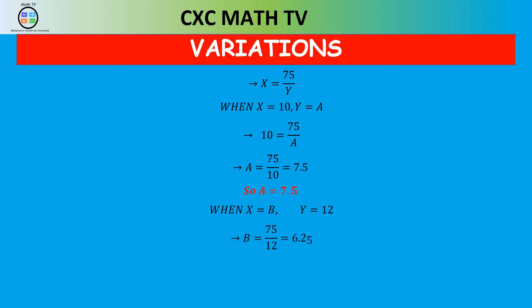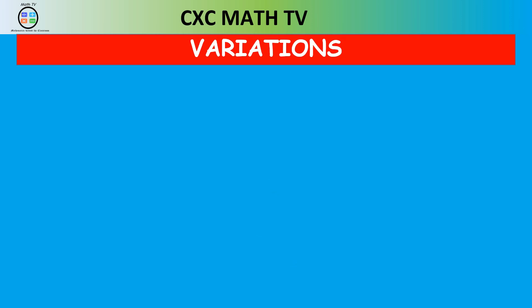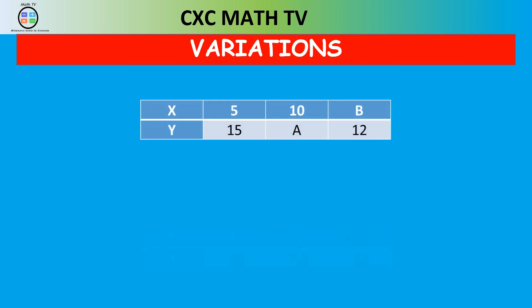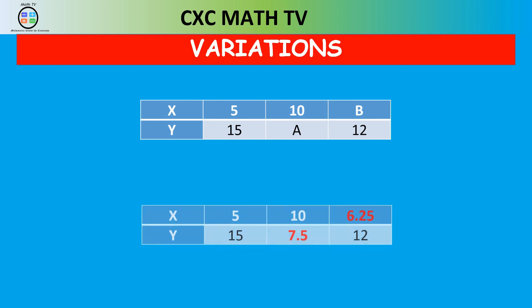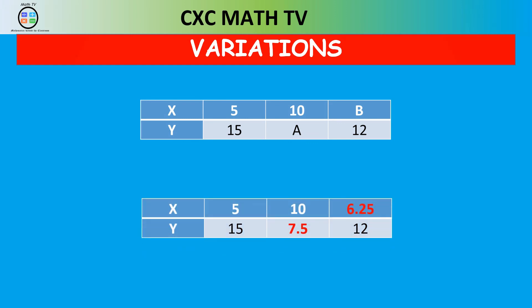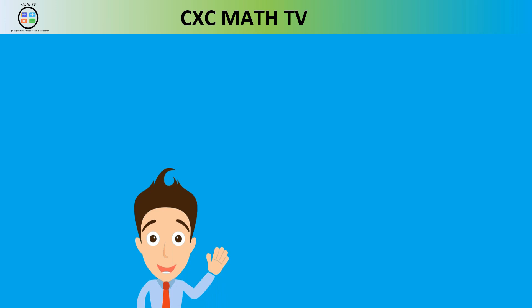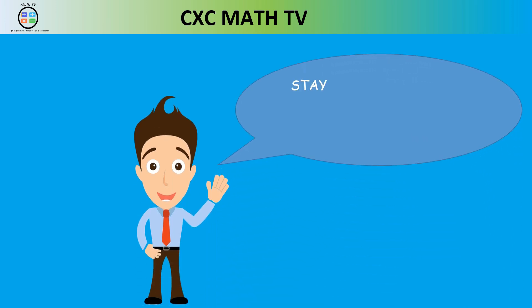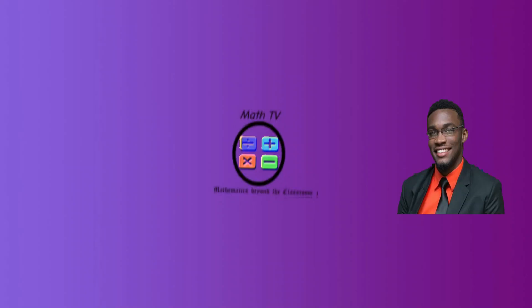So a is 7.5 and b is 6.25. Notice that if you multiply 5 times 15 you get 75; multiply 10 times 7.5 you get 75; and multiply 6.25 times 12 you still get 75. That confirms it is inverse variation and that you are correct. That's it on variations — this is in section 7 of the CSEC math syllabus. Stay tuned for more, and do have a blessed day.